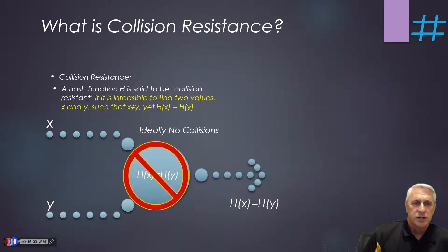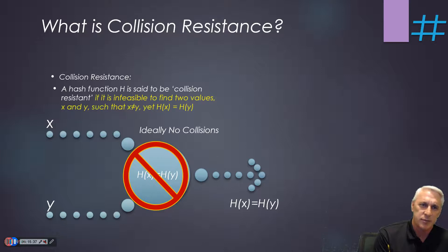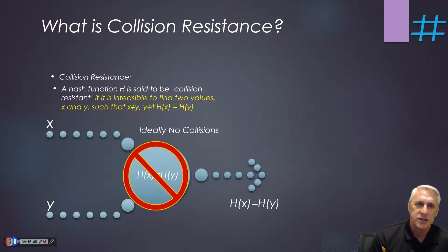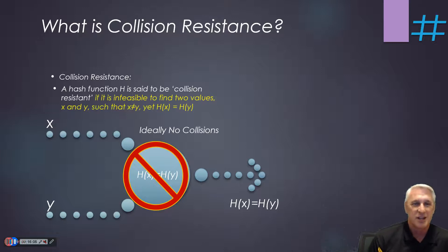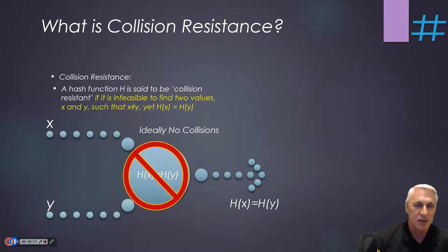Collision resistant means it's not feasible for two messages to create the same hash result. You want something mutually exclusive — unique, like a unique stamp. More technically, we don't want the hash of X to equal the hash of Y if X and Y are different inputs. If I had two messages both starting with 'how,' using the second-letter formula would give 'O' for both — that's a collision, something we don't want. Your output must be unique for each input.